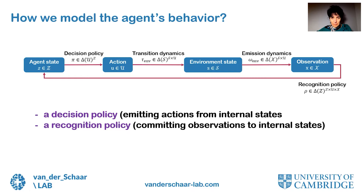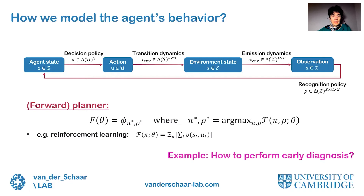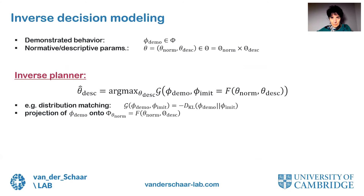So how can we model the agent's behavior? We use the standard decision-making setup. At each time step, the agent is in some internal state Z and takes an action determined by some decision policy. Their action causes the environment to transit into a new external state S and emit an observation, which the agent uses to update its internal state according to some recognition policy. For instance, the forward planner may want to find a policy that optimizes an objective determined by a given set of planning parameters — in the standard reinforcement learning setup, that objective could be the expected cumulative utility or the value function. Here we are interested in the planning problems of interest to humans, for instance how to perform correct early diagnosis given the available information.